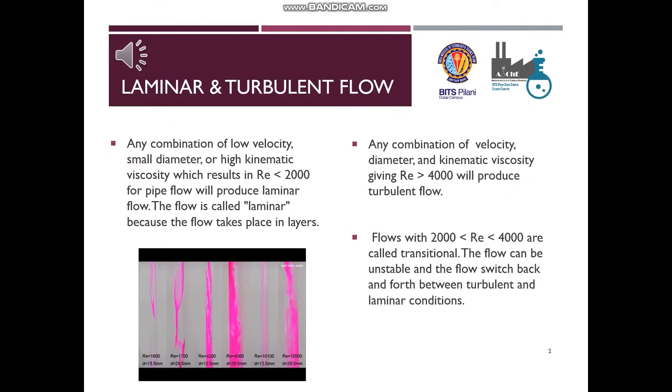Now let us see how to distinguish the flow regimes in terms of the Reynolds number. Any combination of low velocity, small diameter, or high kinematic viscosity which results in Reynolds numbers less than 2,000 for pipe flow will produce a laminar flow. The flow is called laminar because the flow takes place in layers.